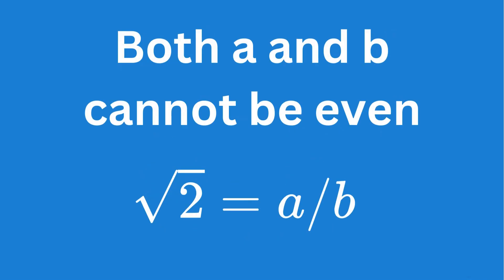Since we initially defined a over b to be a simplified fraction where a and b share no factors at all, this is a contradiction, because both a and b cannot be divisible by 2 at the same time.